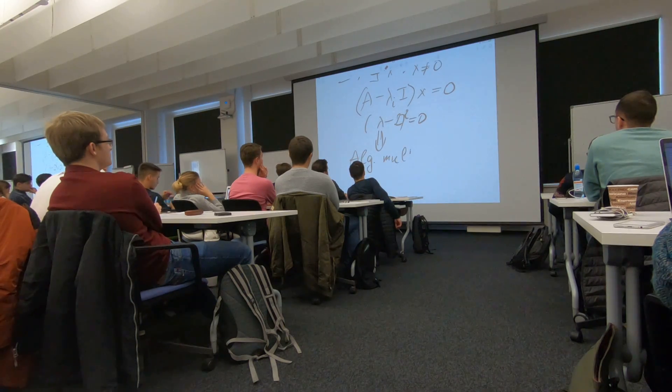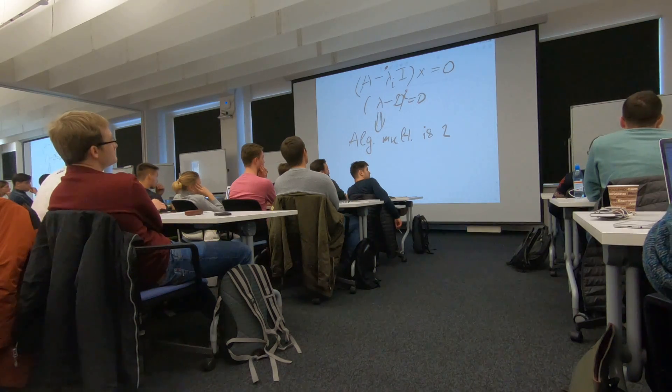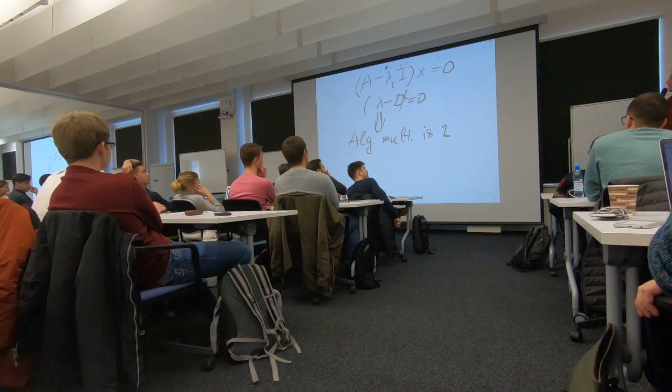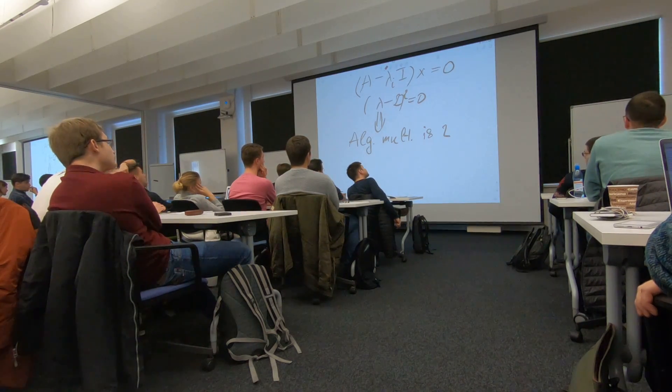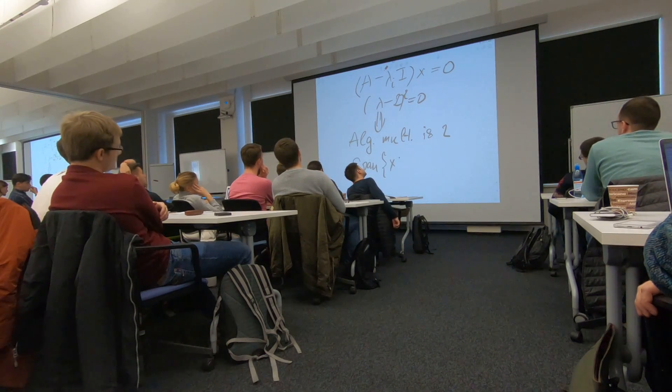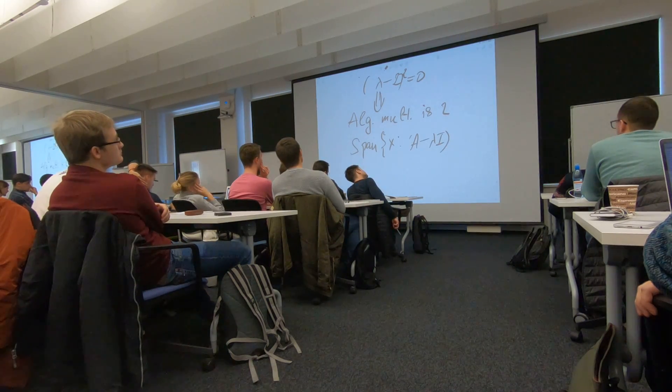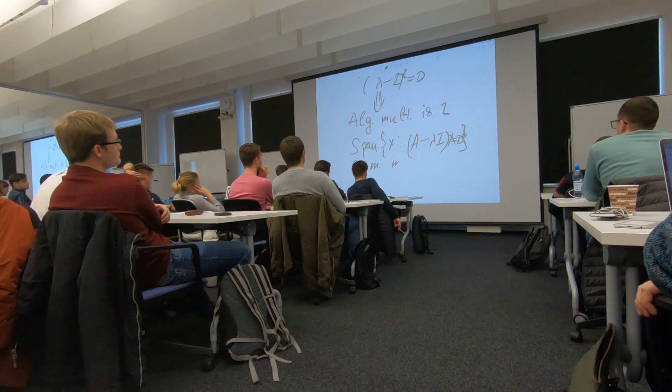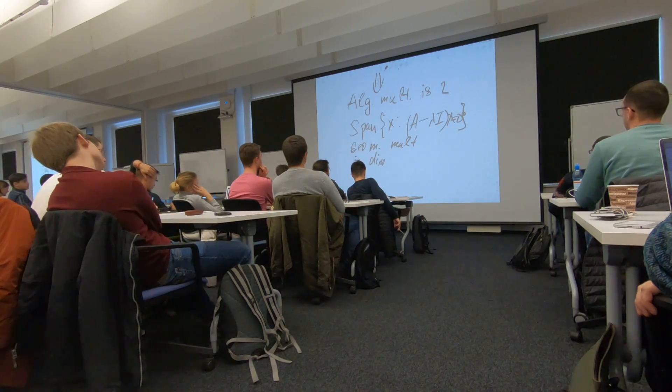Multiplicity is 2. Can you guess what is geometric multiplicity? Yeah, so if you take the space span of all x such that A minus lambda I x equal to 0, and geometric multiplicity is the dimension of the subspace.